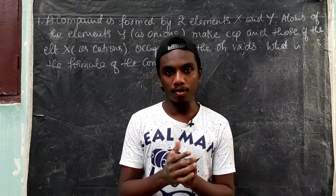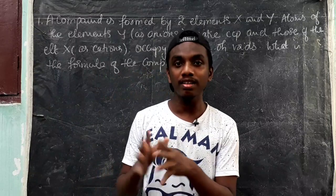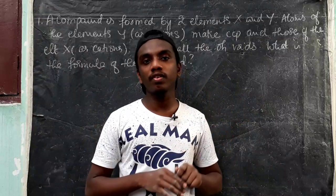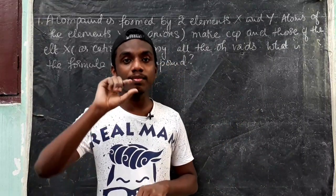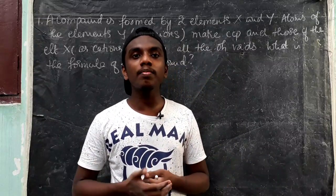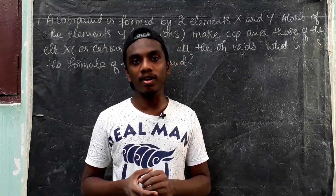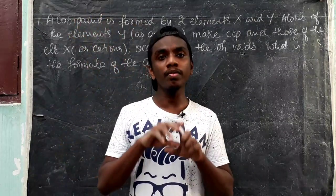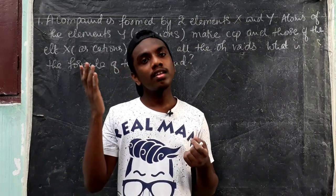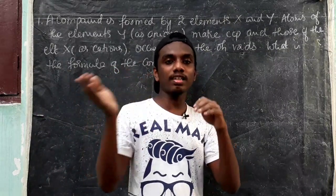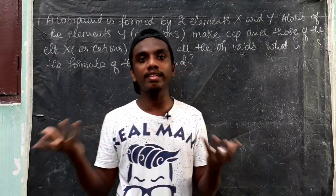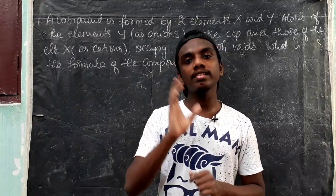This is the formula of the compound I told you in the last class. We have to use the octahedral voids and tetrahedral voids. We use the NaCl rock salt structure. NaCl has 4 Na⁺ and 4 Cl⁻. The simplest formula is NaCl because there is a one-to-one ratio.